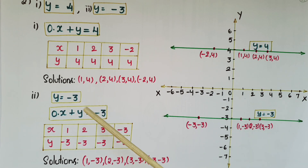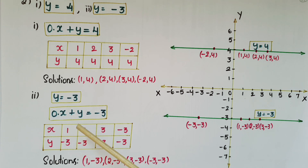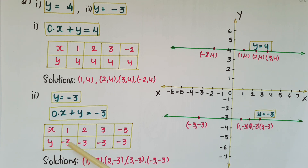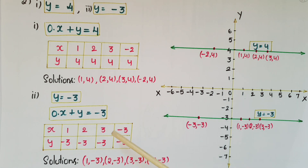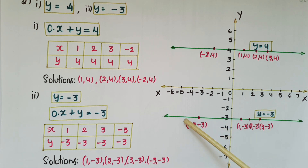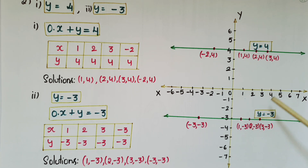Now take equation y = -3. Write it as 0·x + y = -3. Here y is always -3 and x can be any value; I have taken 1, 2, 3, and -3, giving solutions (1,-3), (2,-3), (3,-3), and (-3,-3). Mark these points and join them — you get the line y = -3, which is parallel to the x-axis at a distance of 3 units below the x-axis.